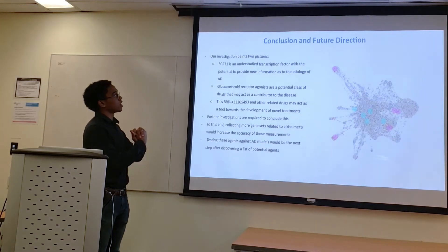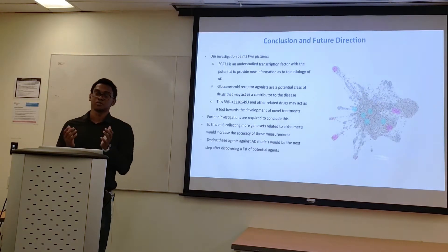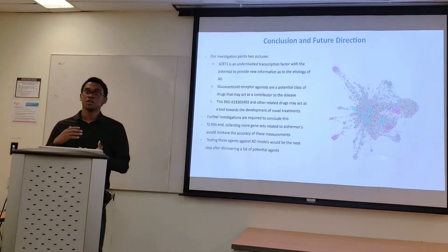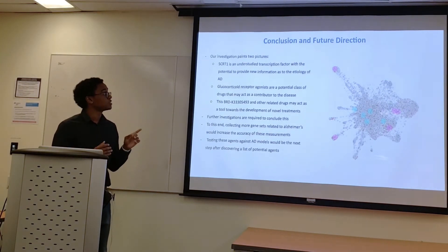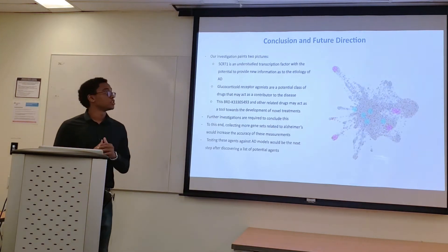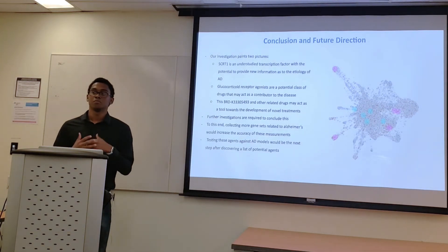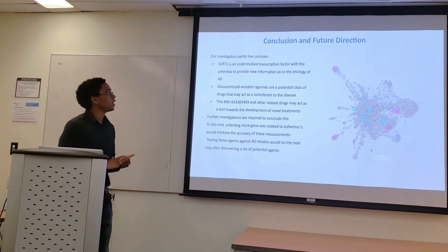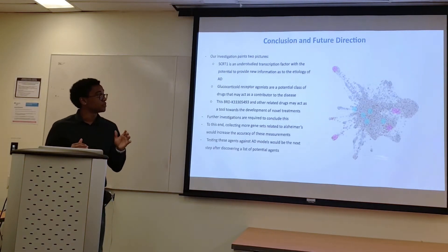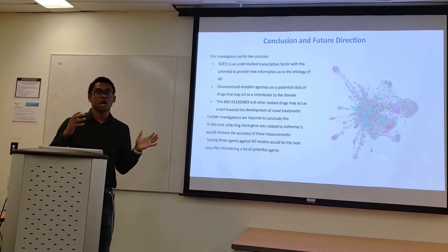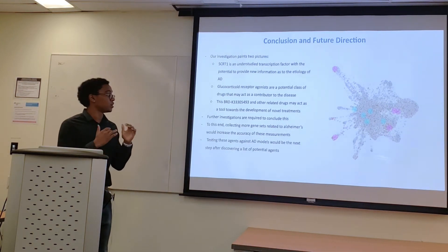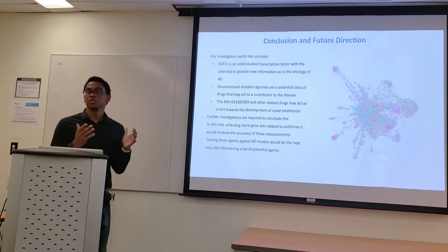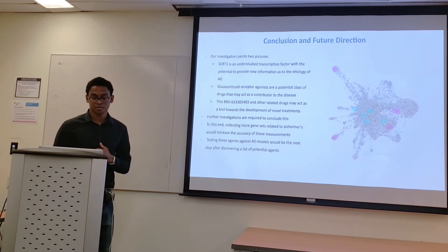We found three particular conclusions of interest. First, SCRT1 is an understudied transcription factor that with further study may lead to new etiologies for Alzheimer's disease. Second, glucocorticoid receptor agonists are a potential class of drugs that may contribute to the progression of Alzheimer's — more research in wet lab and mouse models will further conclude or disprove this. Third, Broad K3305493 and other related drugs could lead to the development of novel pharmaceutical agents. Collecting more gene sets may improve accuracy, and testing these agents with Alzheimer's disease models would definitively prove or disprove these conclusions.